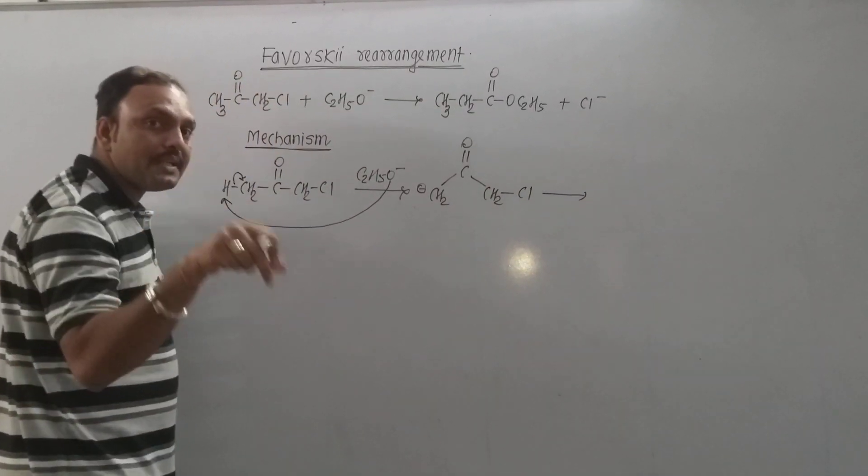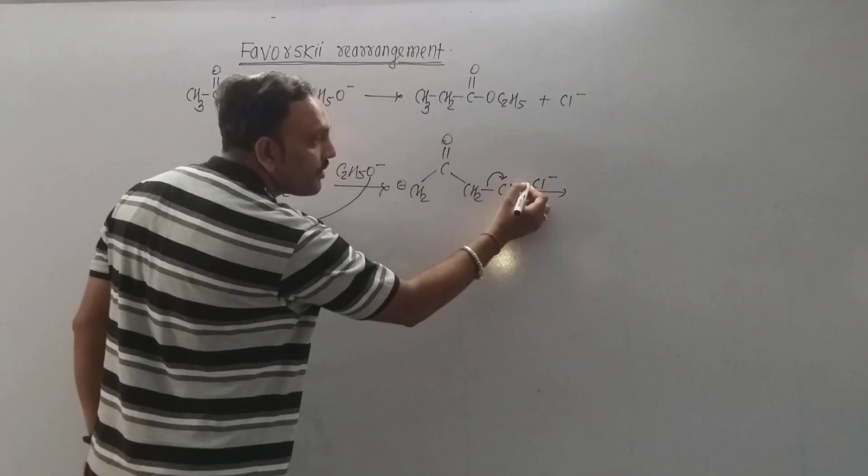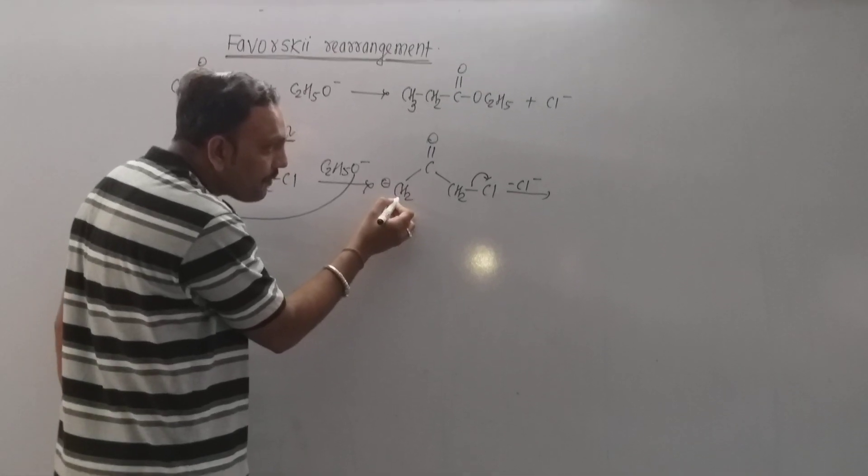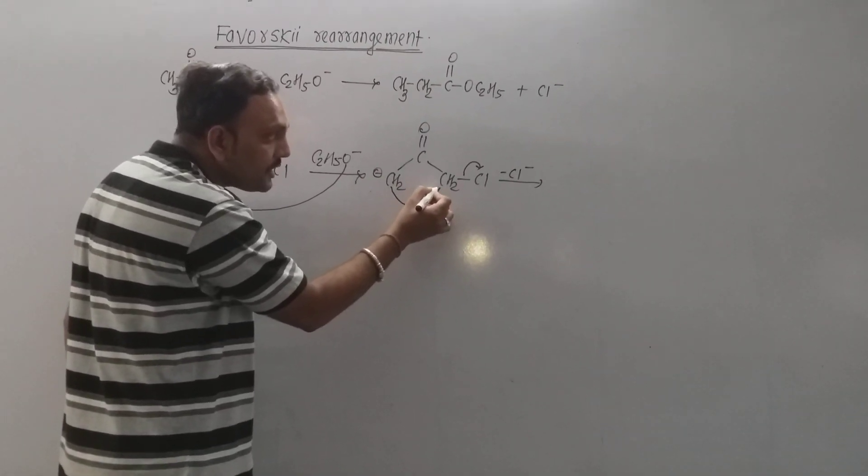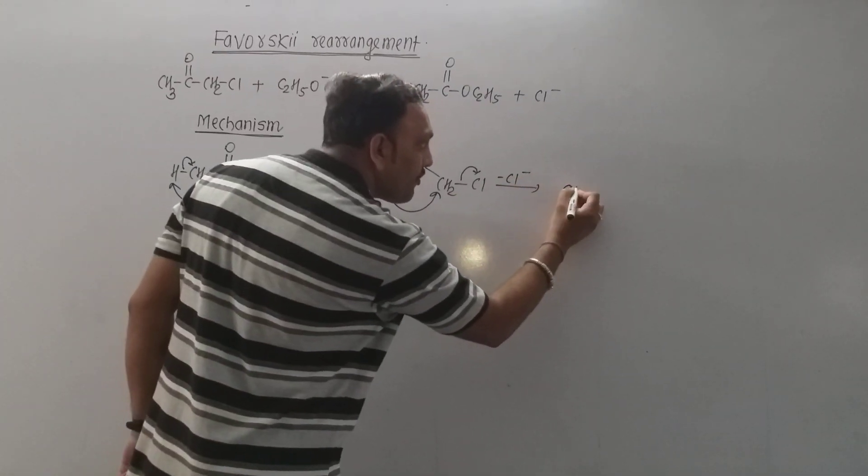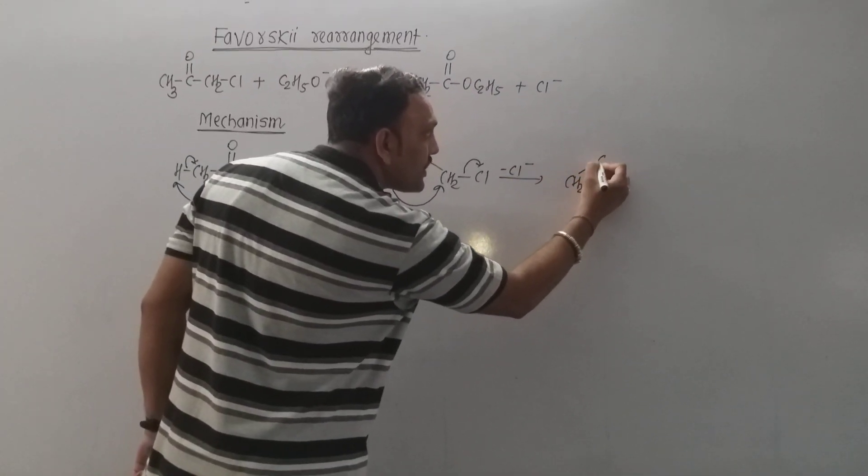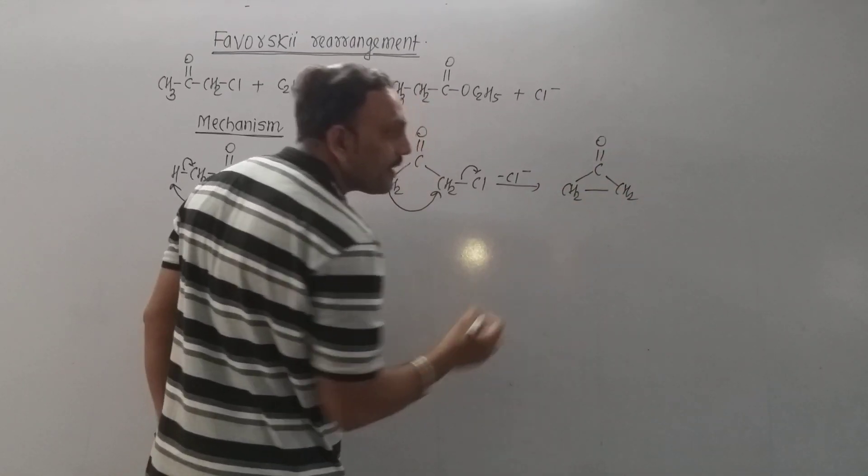At this very point, departure of chloride ion and subsequent attack of this electron-rich carbon on this carbon takes place. That leads to the formation of the cyclic intermediate which can be written as shown.